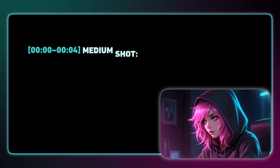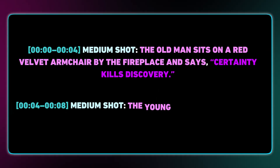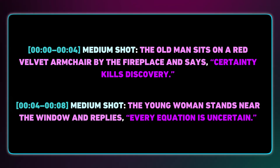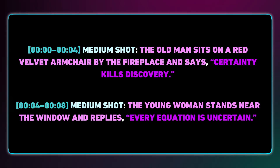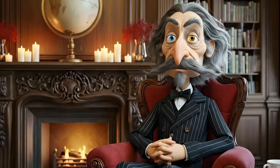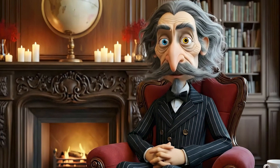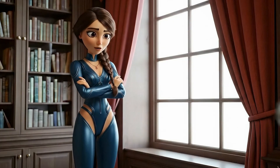Let's try a new conversation with the same characters. Veo 3.1 has an 8-second total limit, so the key is to match your dialogue length to your timestamps — all within those eight seconds. Just balance your shot length with your dialogue length to get the pacing you want, and keep the total under eight seconds.